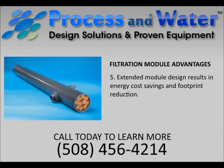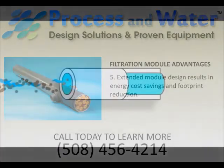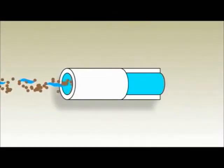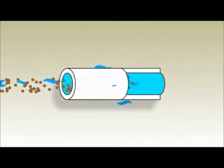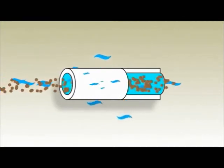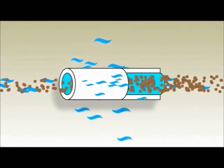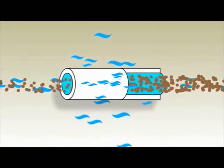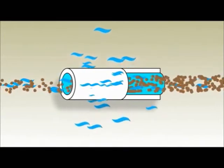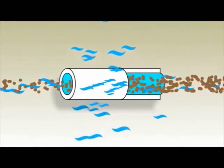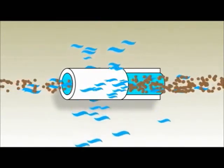Check out this short clip from the manufacturer outlining the operation. Let's see how the microfilter works. Contaminated water enters the tubes at high velocity and moderate pressure. Clean water passes through the tube membrane while contaminants in particulate forms are retained and swept along in the turbulent flow.